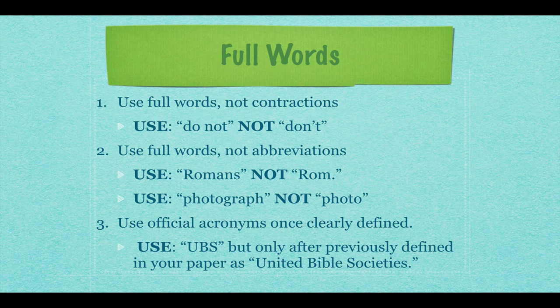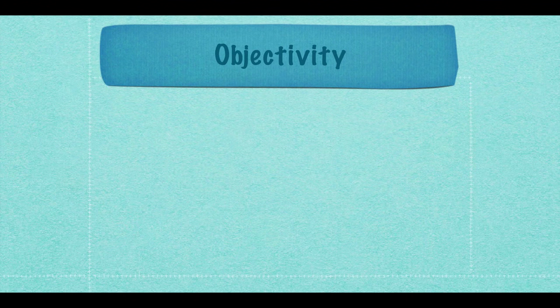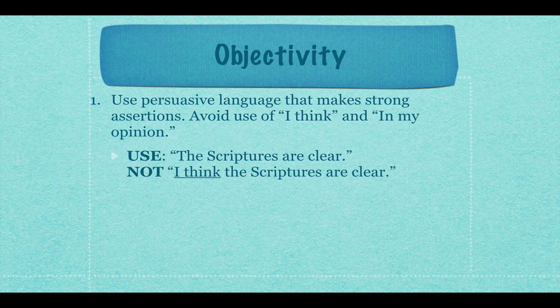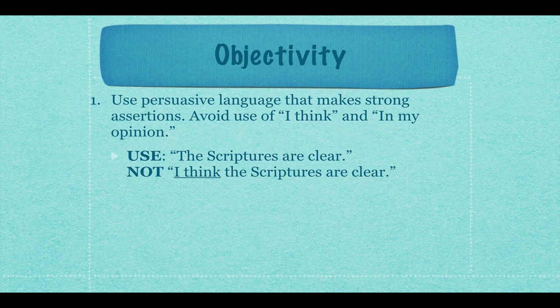This leads to the idea of objectivity. You'll want to use persuasive language that makes a strong assertion, but avoid phrases like 'I think' and 'in my opinion.' So say 'the scriptures are clear,' not 'I think the scriptures are clear.' This paper is written by you, so obviously all the content is what you think or believe — qualifying it just adds unnecessary words. You're trying to persuade a reader and get them to believe your thesis, so simple declarative sentences are fine.